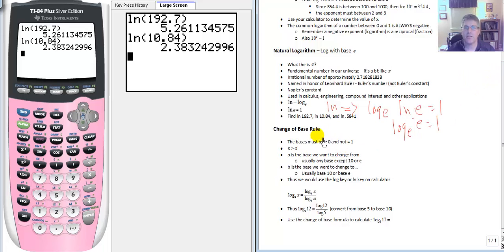The final concept in this section is the change of base concept or the change of base formula or rule. Okay. To use the change of base rule, bases must be greater than 0 and not equal to 1. Our x must also be greater than 0. Okay. So our bases are the A and the B here. B is the base we want to change to. Usually base 10 or base e. So we can use the common or the natural log. So B is the base we want to change to. And A is the base we want to change from.